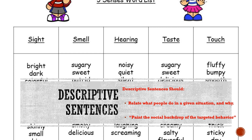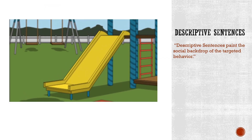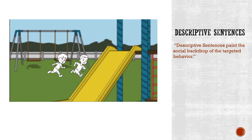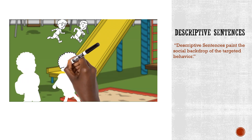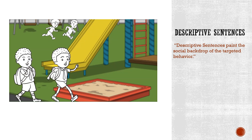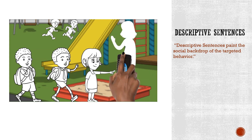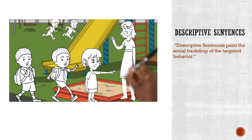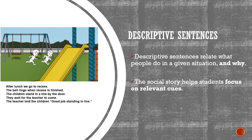For example, instead of writing 'recess games are fun,' I would write 'children play games at recess.' Now let's look at how a story would look when it's written in the correct format: 'After lunch, we go to recess. The bell rings when recess is finished. The children stand in a line by the door.' In this example, we can see that the social story helps students focus on the relevant cues about what people do in a given situation and why they are doing it. Descriptive stories contain a majority of descriptive sentences.